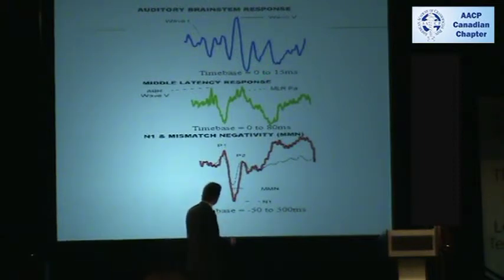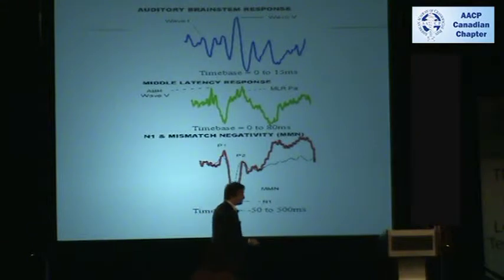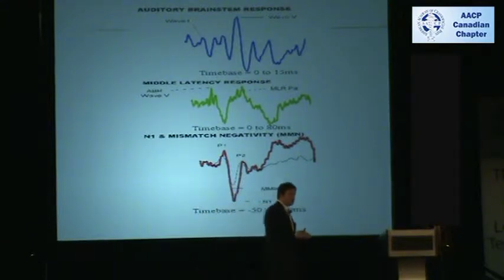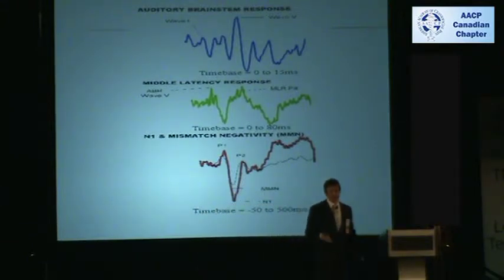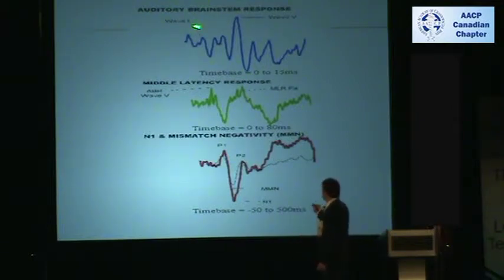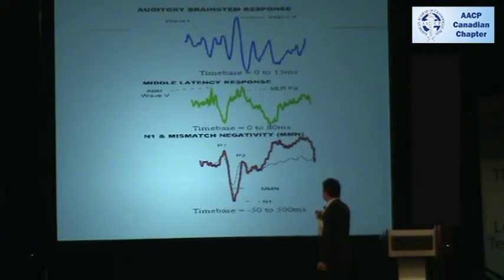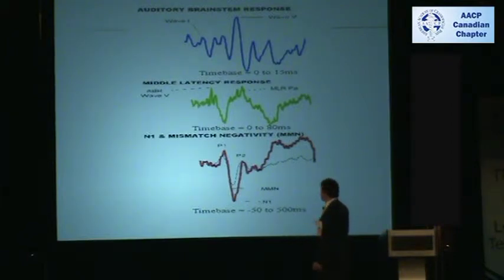For the time window between 0 and 50 milliseconds after the initiation of the stimulus — typically either auditory or visual — we can tell, at least in this case, brainstem auditory evoked potentials. In this instance, you can see if you've got the W1 and W2 wave, you're looking primarily at cranial nerve number 8. And here you have the middle latency responses from 0 to 80 milliseconds.